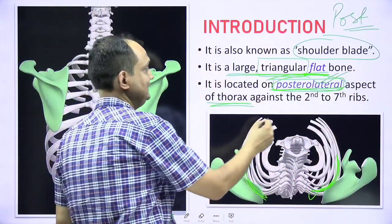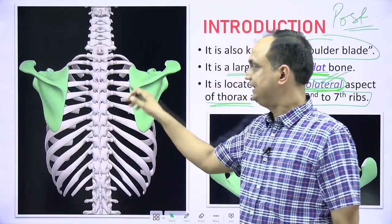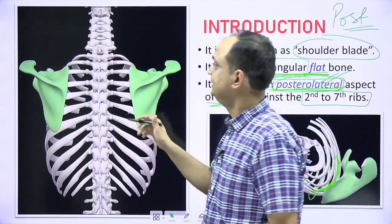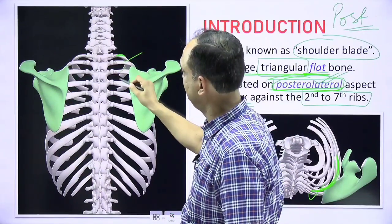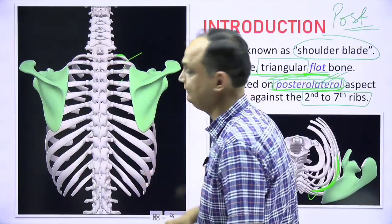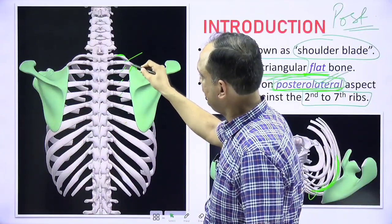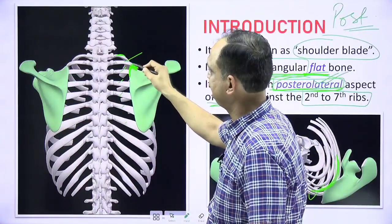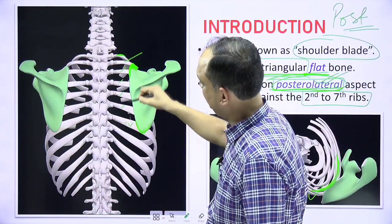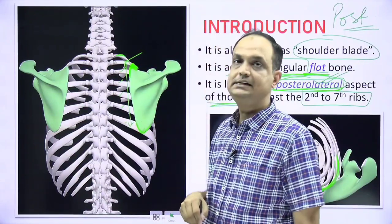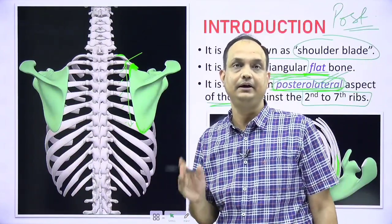The scapula lies against the second to seventh rib. In this diagram you can see the first rib, then the second, third, fourth, fifth, sixth, and seventh rib. This is the upper part of your Scapula and this is the lower part of the Scapula. So vertically, it is lying against the second to seventh rib.